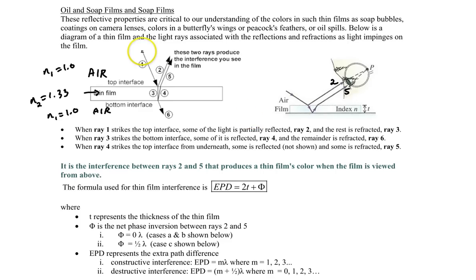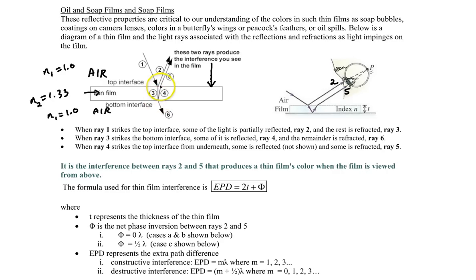The initial light comes in along ray 1 — technically straight down but drawn at an angle to show the paths. Part reflects as ray 2 at the first surface; the rest refracts inward along ray 3. At the bottom interface, part transmits and part reflects along ray 4, then refracts back out as ray 5. Rays 2 and 5 travel together to your eye, and their interference produces the colors.